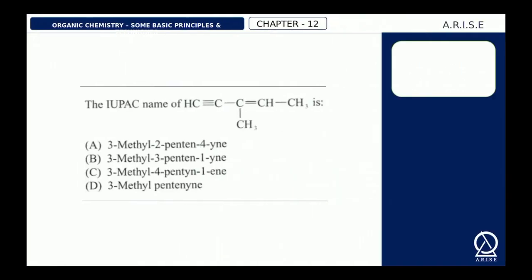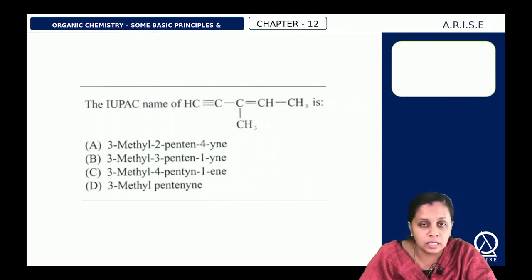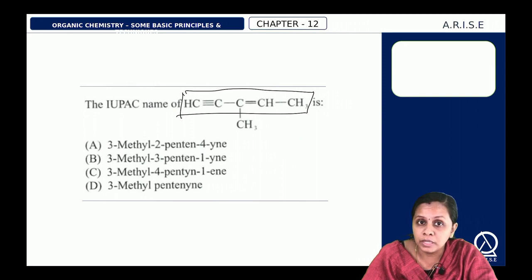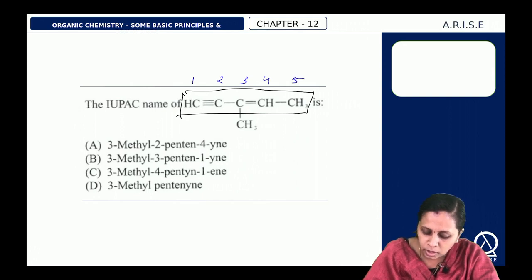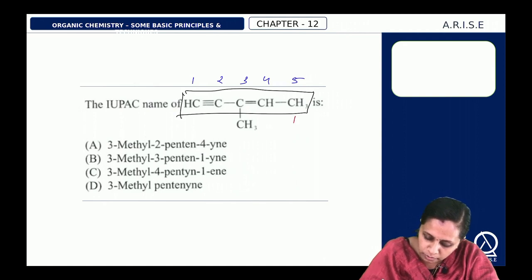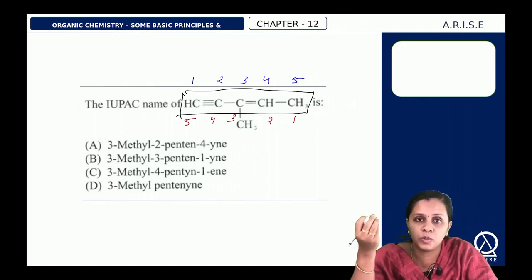The next question asks for the IUPAC name of CH≡C–C(CH3)=CH–CH3. There is no confusion in the longest carbon chain. You can number from the left side 1, 2, 3, 4, 5, or from the right side. The substituent CH3 is in the third position either way.